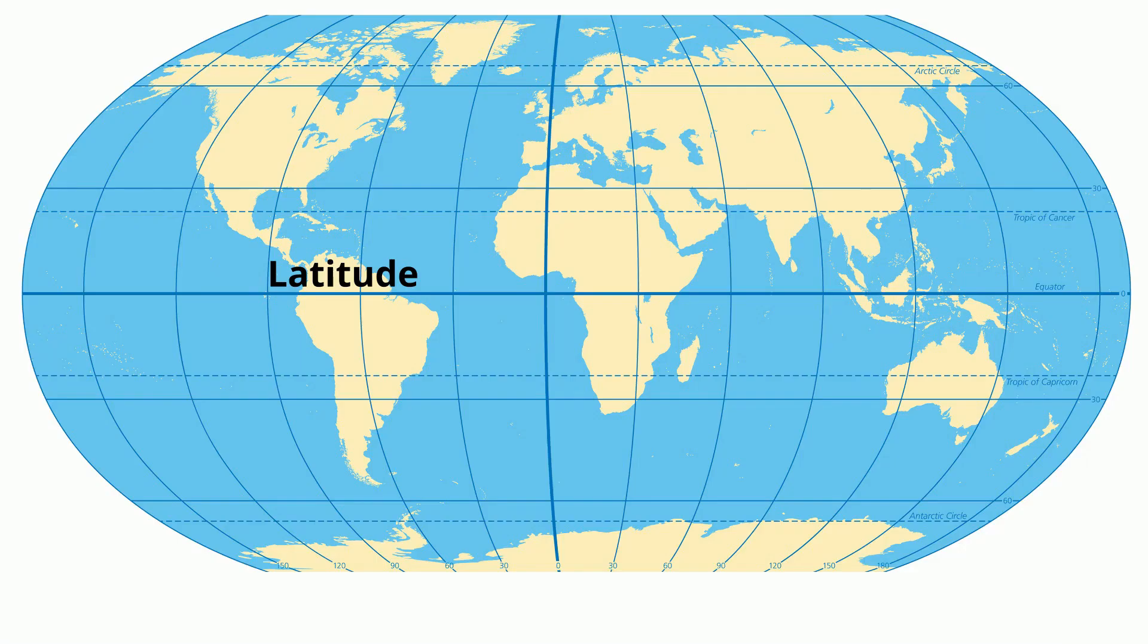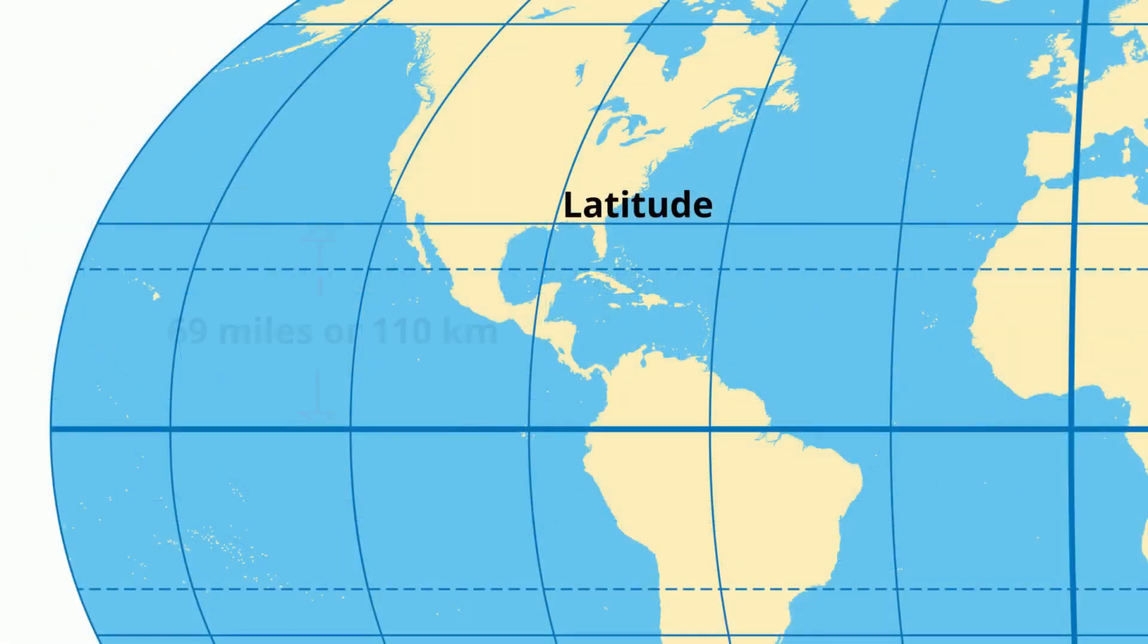Lines of latitude are always read first, they are also called parallels. Lines of latitude are horizontal lines that measure north and south. Lines of latitude are about 69 miles apart from one another, or 110 kilometers.